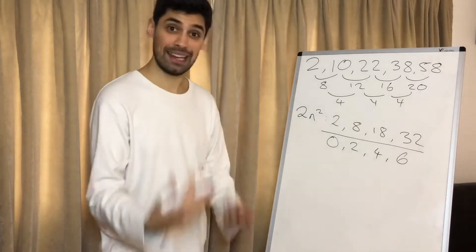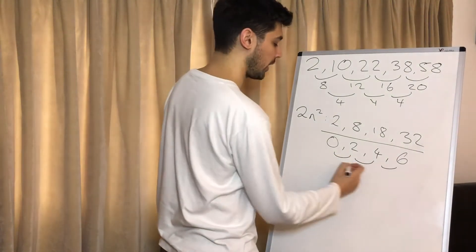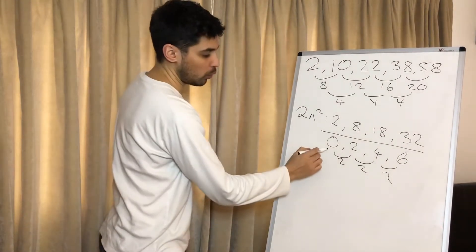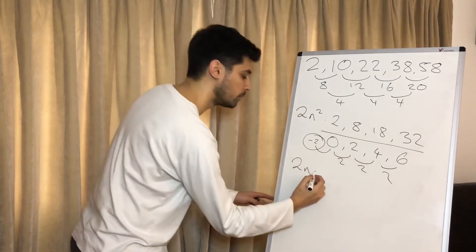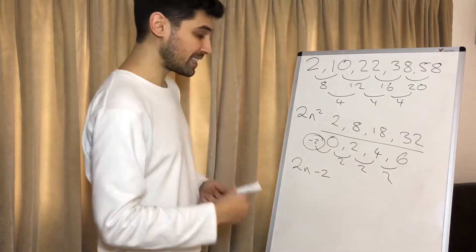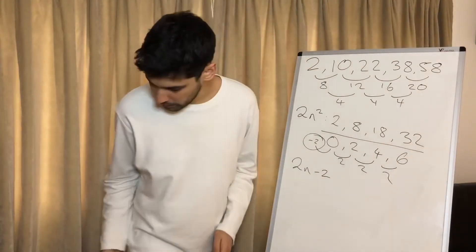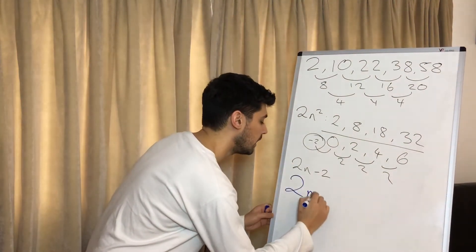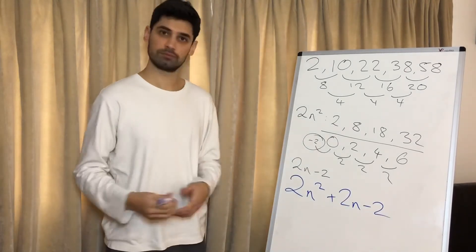Now we've got a regular linear sequence which should be nice and easy. These are all going up by 2, and that's a positive 2, so that's going to give us 2n. What would be the term before there if we had one? Well that would be minus 2, because they're all going up by 2. So that is minus 2. Sticking it all together, the final answer is going to be 2n squared plus 2n minus 2.